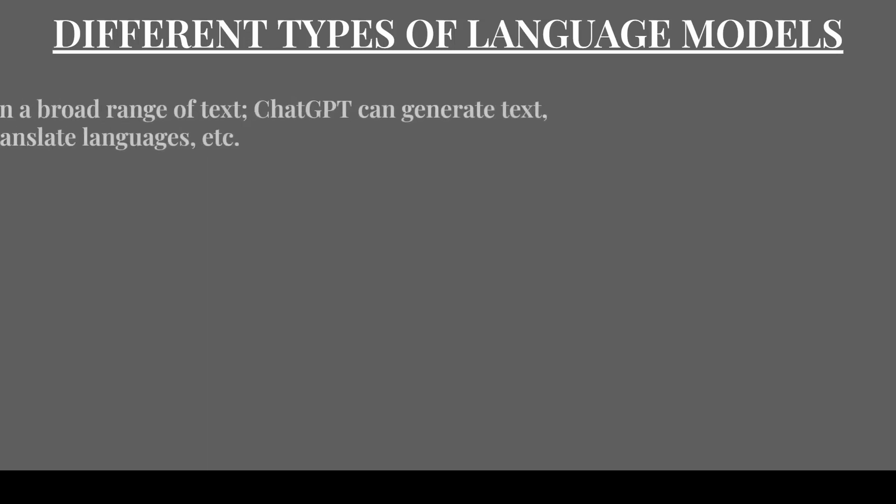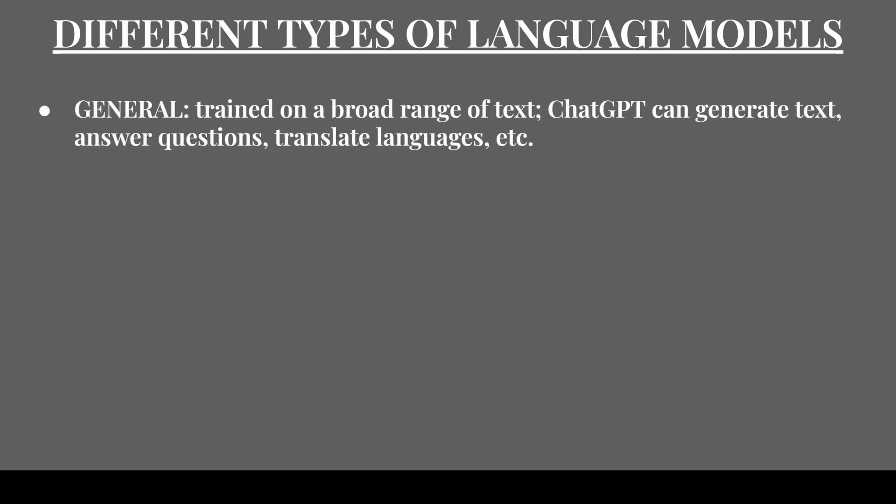So let's start with ChatGPT, which is a general language model. It is trained on a broad range of text and can generate a wide range of responses. These types of language models are typically used for general applications, such as chatbots and virtual assistants, and ChatGPT can therefore generate text, answer questions, translate languages and do much more.